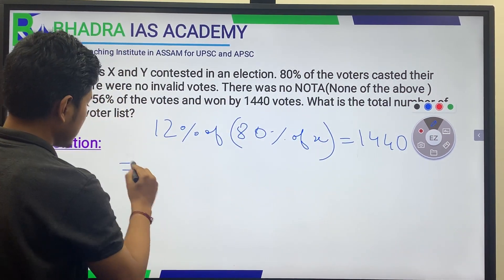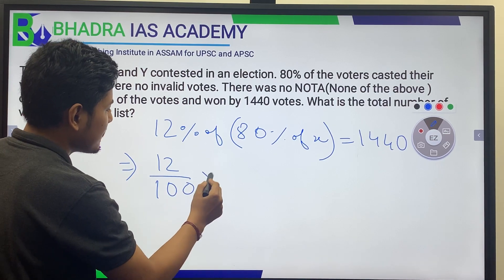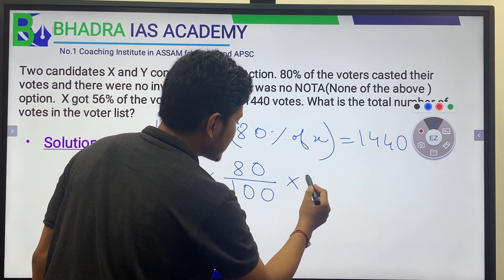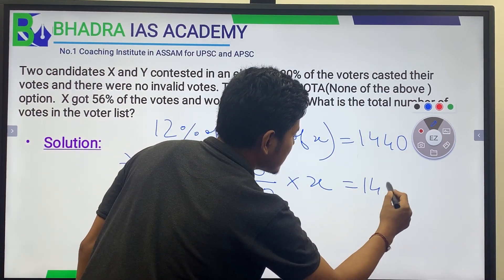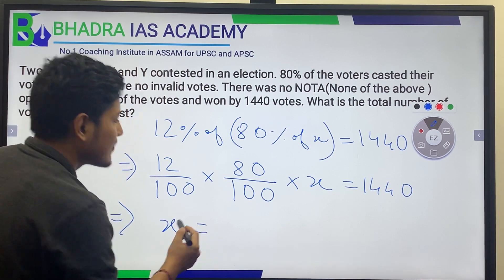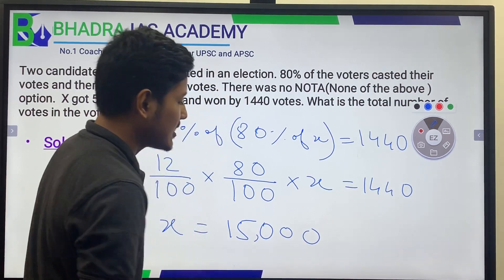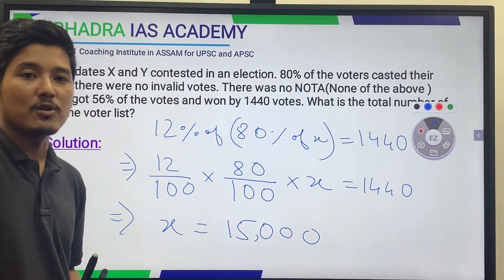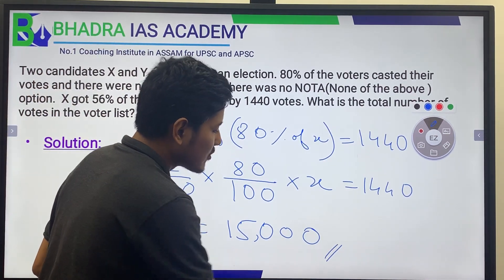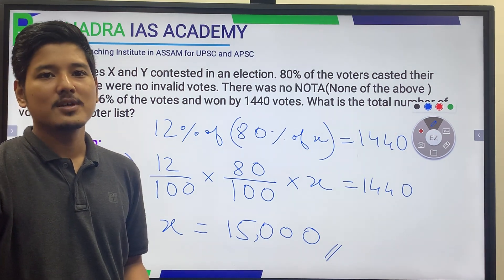Simplifying: 12 divided by 100 multiplied by 80 divided by 100 multiplied by X equals 1440. Solving this, X equals 15,000. So the total number of voters enrolled in the voter list is 15,000.